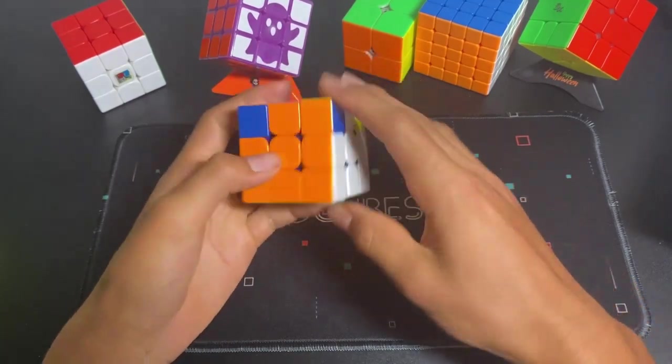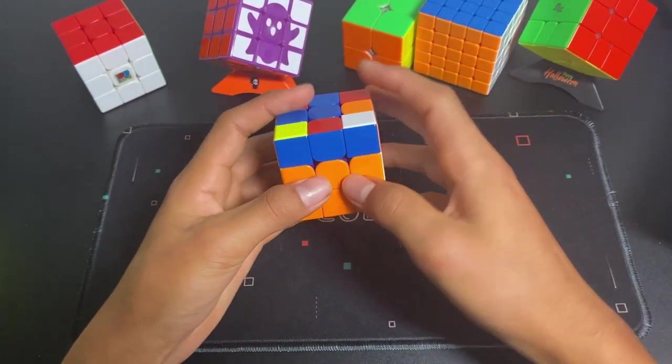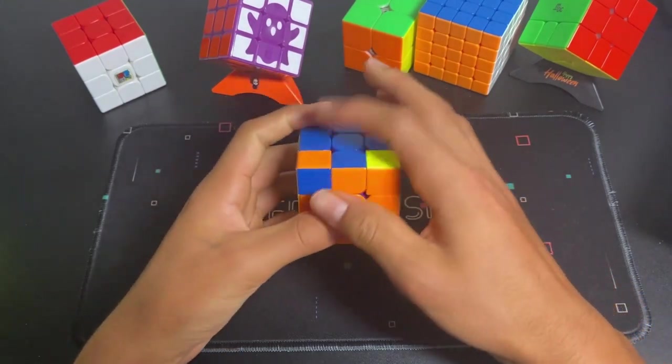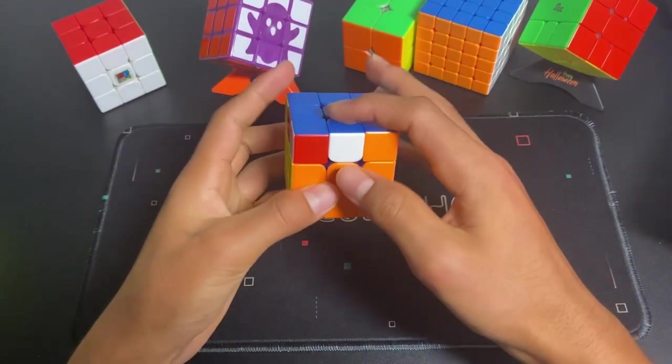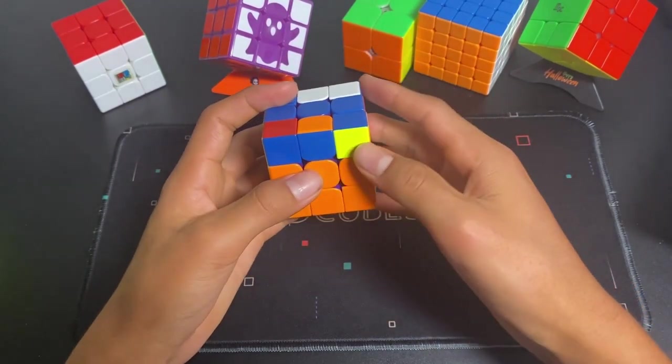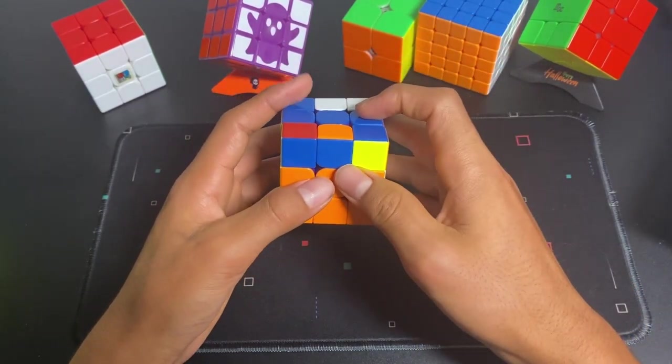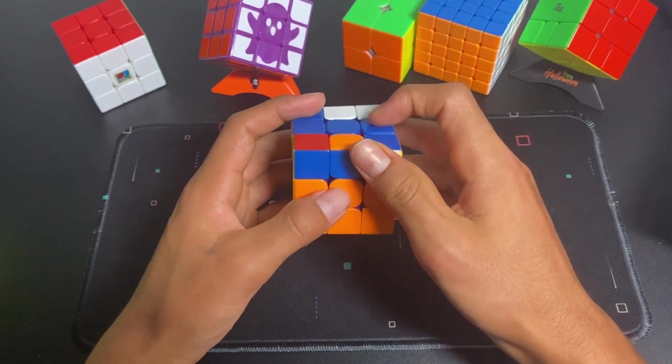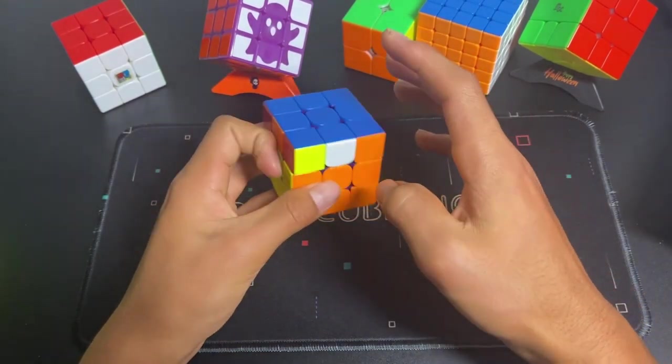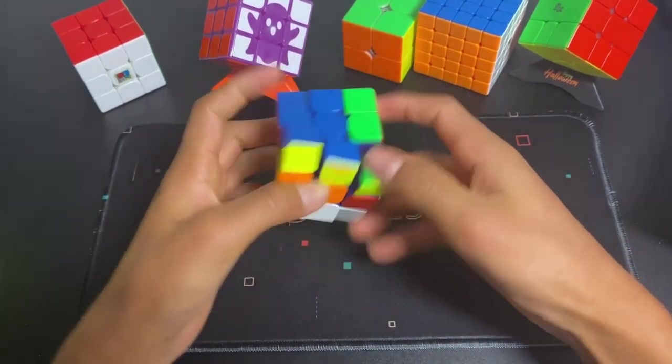So instead of seeing this, if you do 2-look-OLL, you would first make the cross and then solve the edges. But if you are learning full OLL, you can just do one algorithm, and then you need to immediately recognize this, and then execute it with high turn speed.